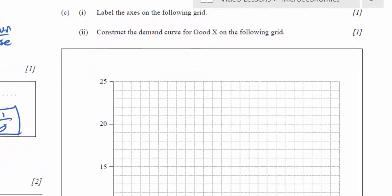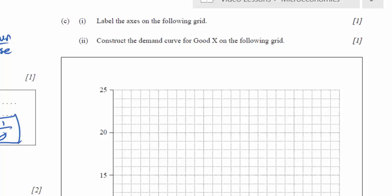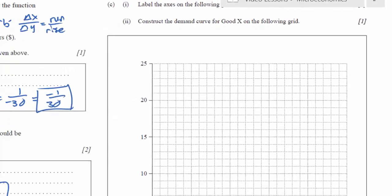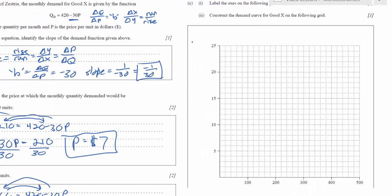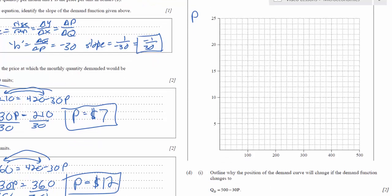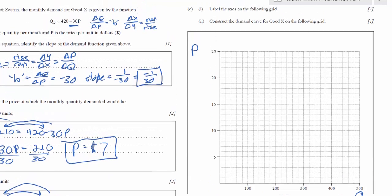Let's move on to the next part of this problem. Label the axes on the following grid. Okay, a softball. This one's easy. We've got the price and we've got the quantity. Easy enough. One point.